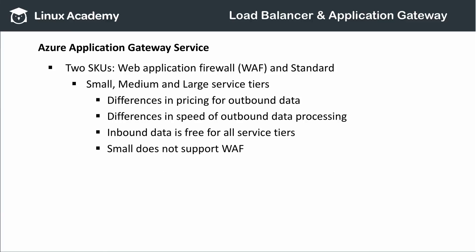The Application Gateway service comes in two SKUs: Standard and Web Application Firewall. If you want to use the Web Application Firewall, you need the WAF SKU; otherwise, use the Standard SKU. There are three service tiers — Small, Medium, and Large — differing primarily in request processing speed, cost of outbound data, and the amount of free data output per month. All inbound traffic is free for all service tiers, and it's important to know that the Small service tier does not support Web Application Firewall.